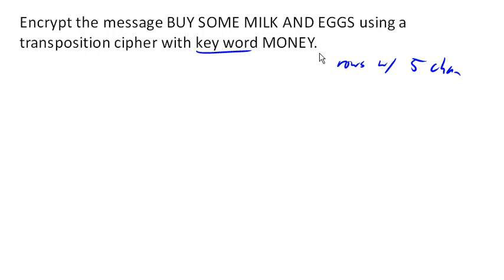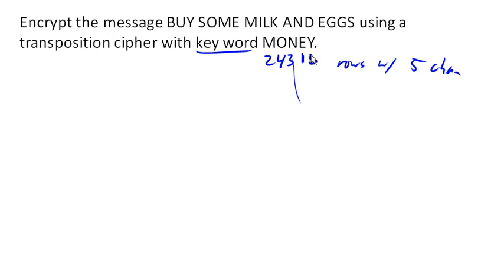We're going to look at the word 'money' and determine the order that these letters appear in the alphabet. E shows up first, then M, N, O, and Y shows up last. This tells us the order in which we are going to read the columns of our encryption key.